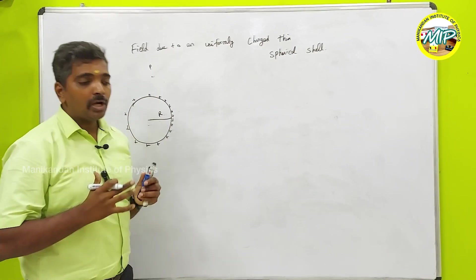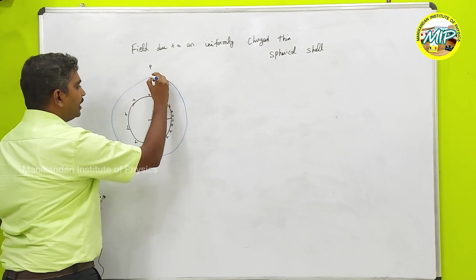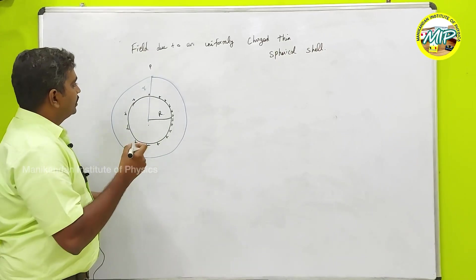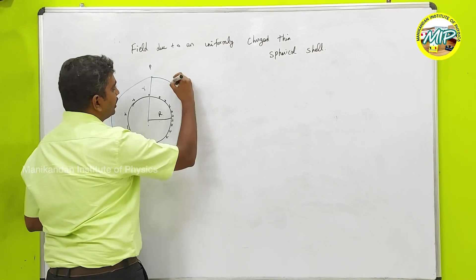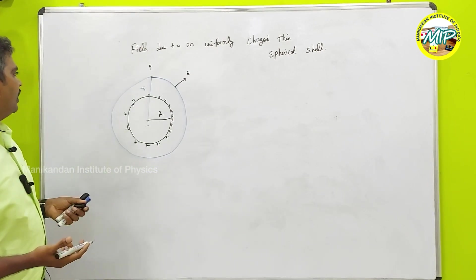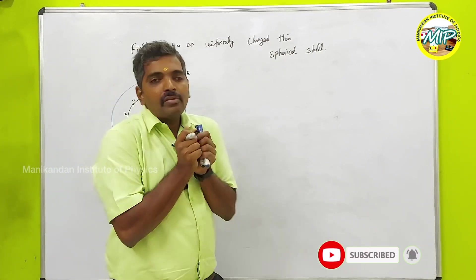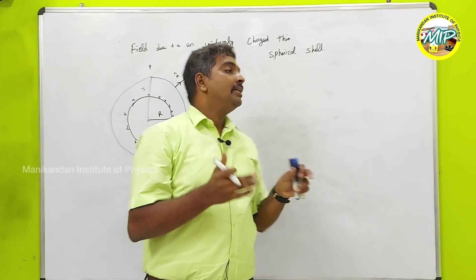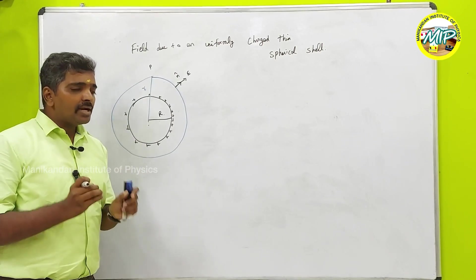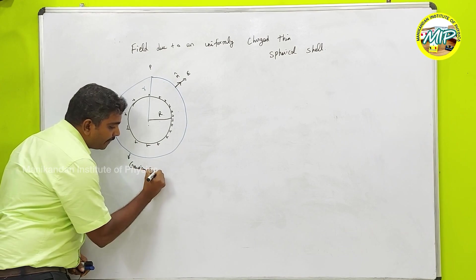I am going to consider an imaginary Gaussian surface of radius R. The electric field from a positive charge is always going outwards. The normal to the Gaussian surface is also in the same outward direction — it is parallel to the electric field. It is like sitting in the center of a football where all the surface is perpendicular to you, which means the normal is parallel to the electric field. This surface is called the Gaussian surface.